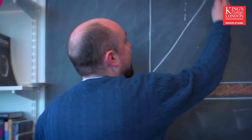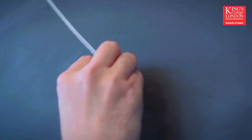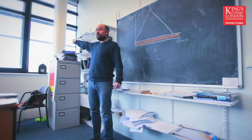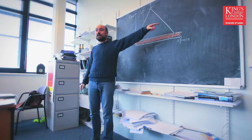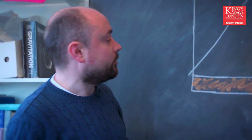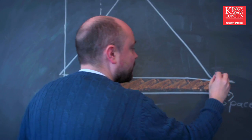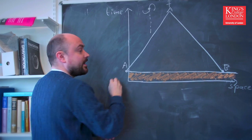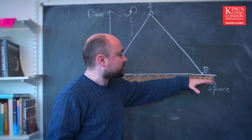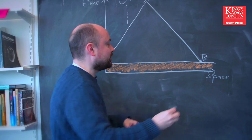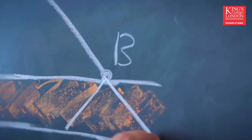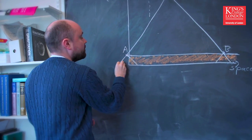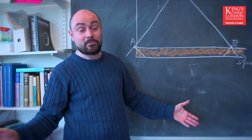If we look in that direction and in that direction, that corresponds to looking in opposite directions in the sky. When we detect this radiation, it has exactly the same temperature over there as it has over there — and that's the horizon problem. The problem is that when we look in that direction we're looking at patch B, and in that direction patch A, and in the 400,000 years between the Big Bang and when that light was emitted there isn't time for a signal to travel between A and B. So how can they both have exactly the same temperature?